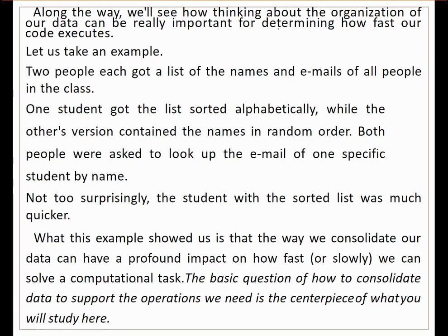Consider this example: there are two people, each with a list of names and emails of all people in a class. One sorted the list alphabetically; the other kept it in random order. Both can look up the email of any specific student by name, but by common sense we know that the person with the sorted list can find it much more quickly.